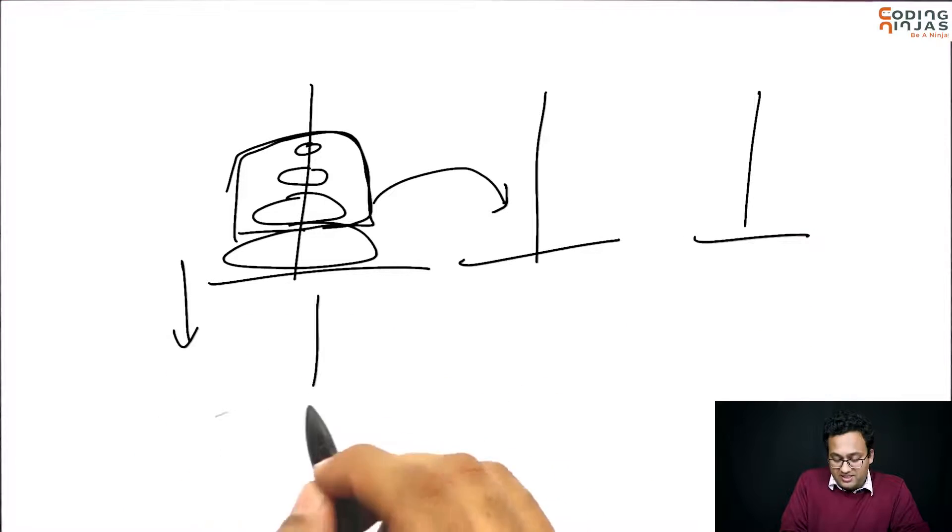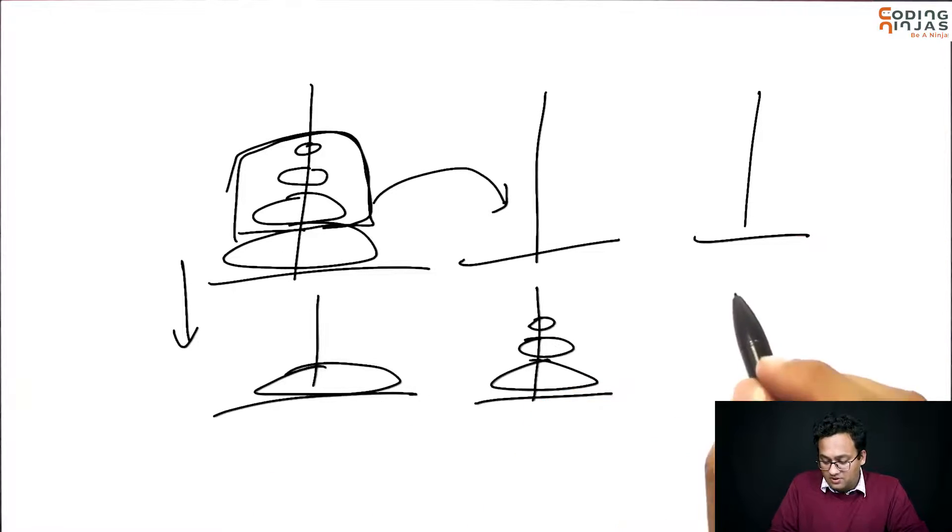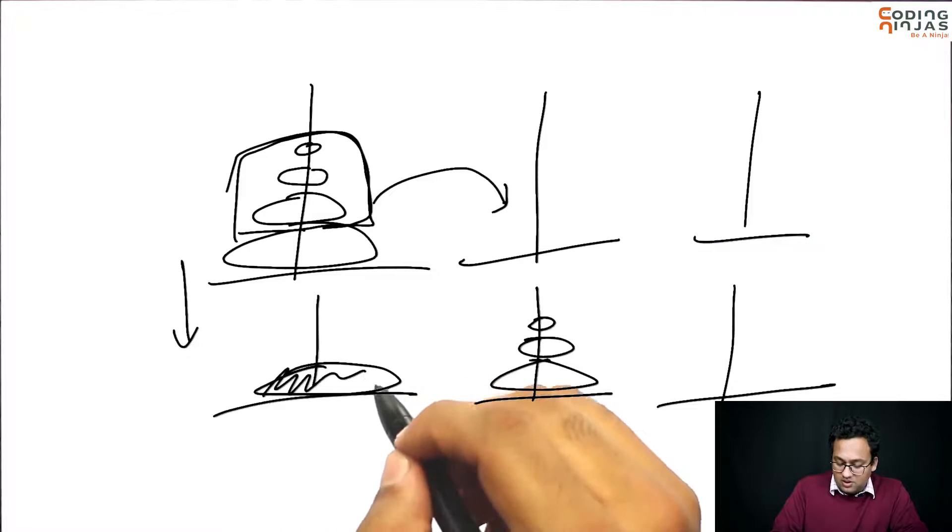So, the next state will be, there will be one disk here. There will be these many disks here. So, you will be in this state. Now, move this disk here. So, the largest disk we have moved to the destination.